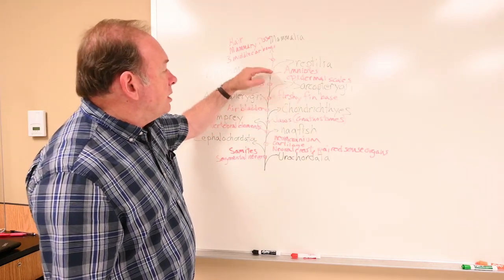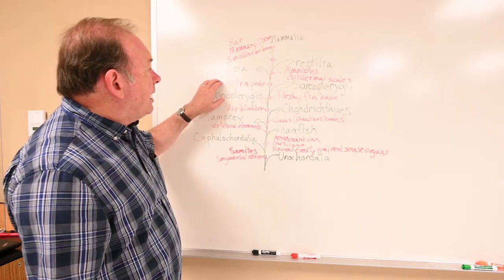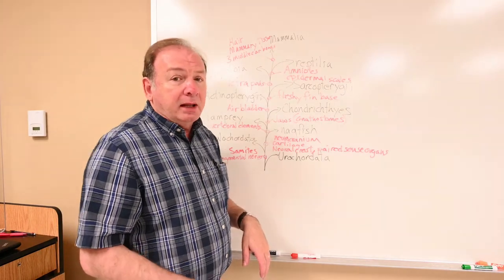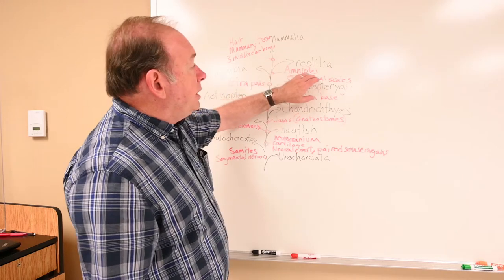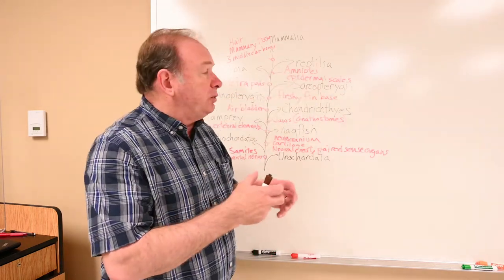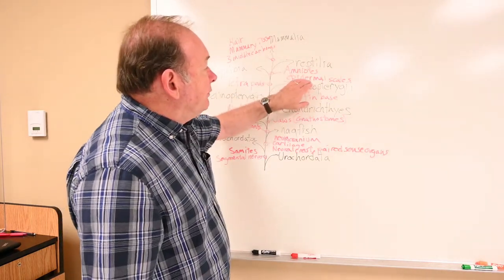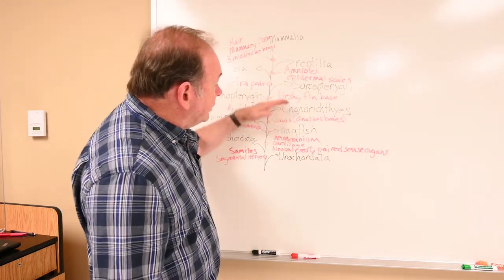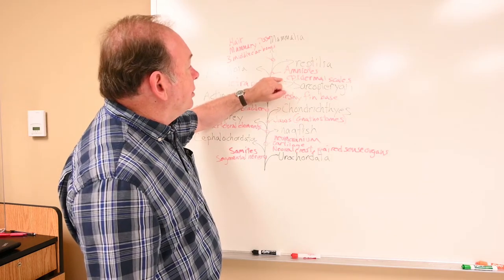Now we go on to tetrapods — four-legged animals that are primarily on land. Amphibians are the first group and include frogs, salamanders, and caecilians. Above that we have amniotes, which all have an amniotic egg — a special membrane that surrounds the embryo during development. We also see for the first time epidermal scales, scales formed in the epidermis instead of the dermis as in other fish.